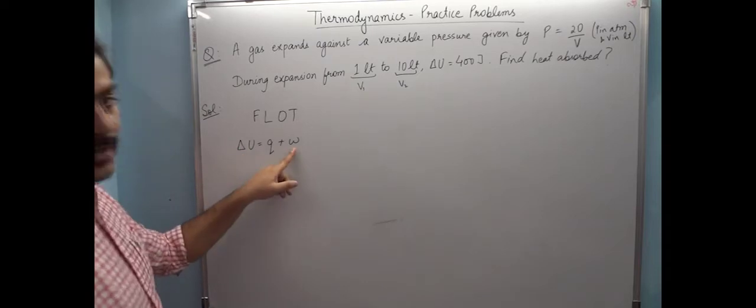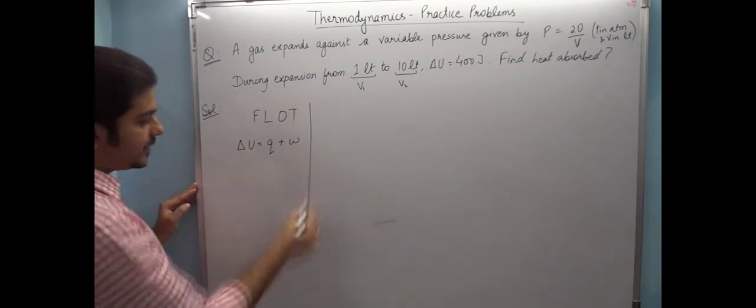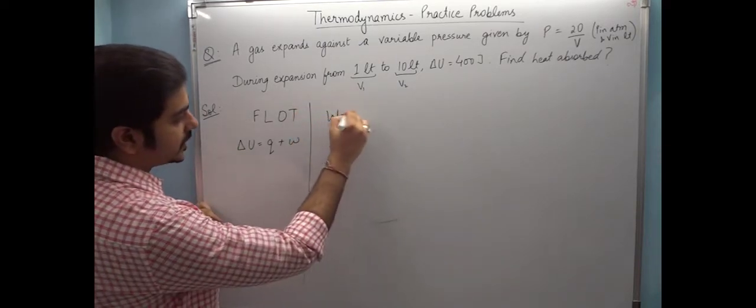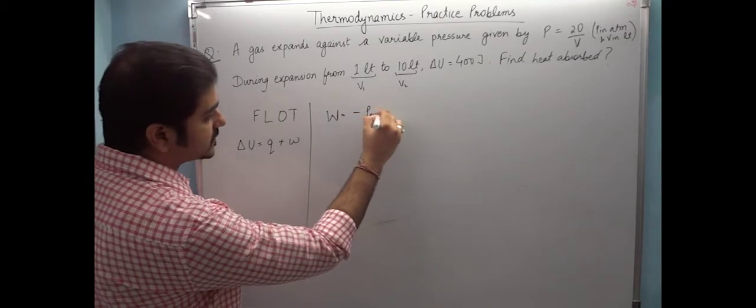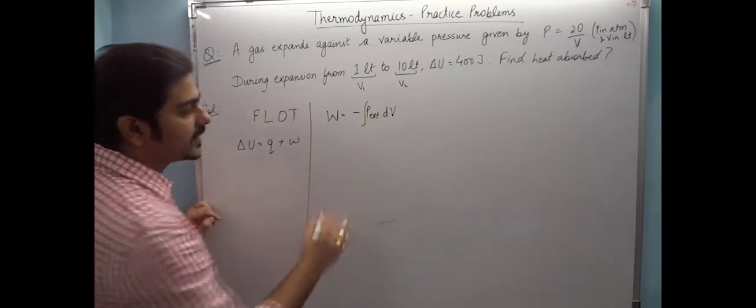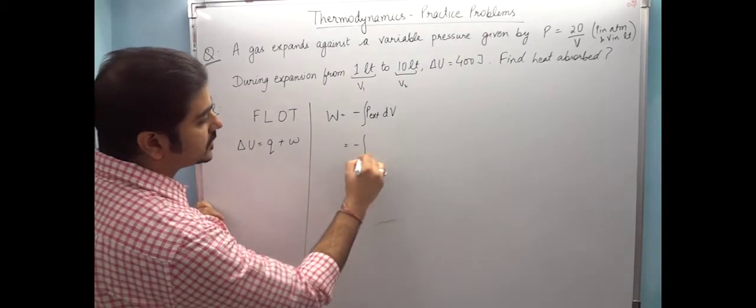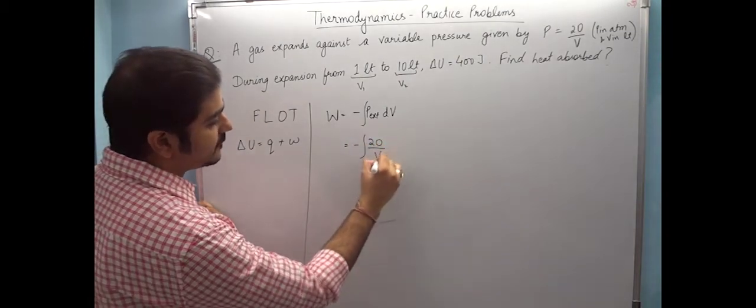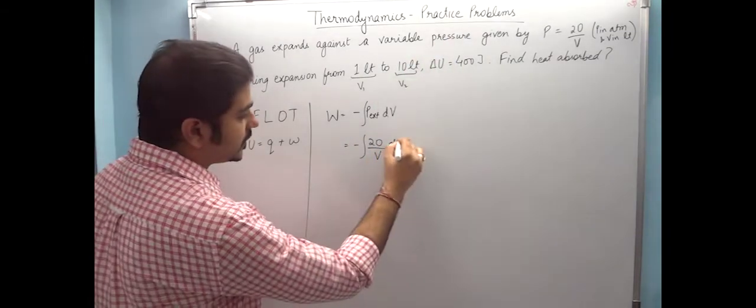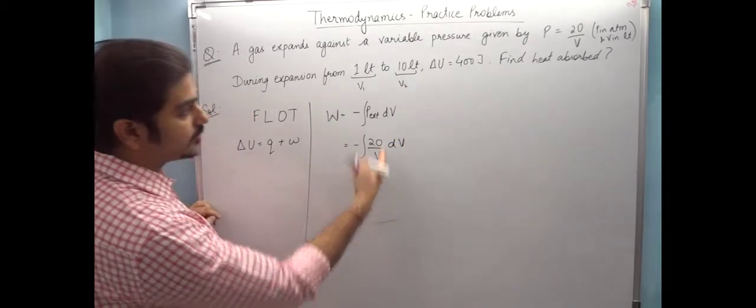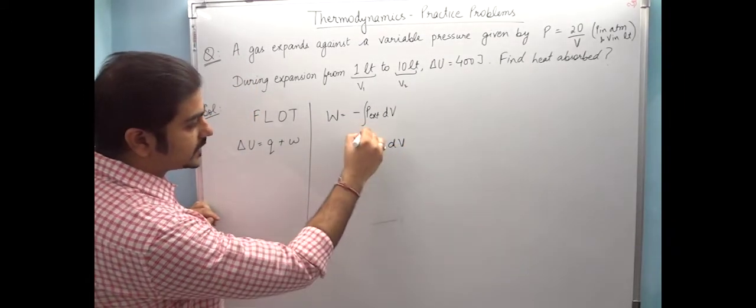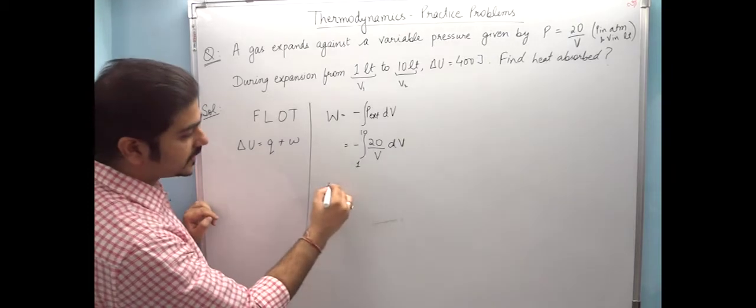First I'll calculate work done. Work is minus the integral of P external dV. That is minus 20 by V, as given in the equation, dV. And what are the limits? Volume goes from 1 liter to 10 liters.